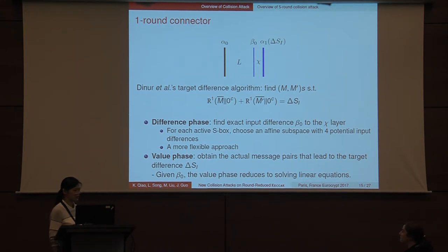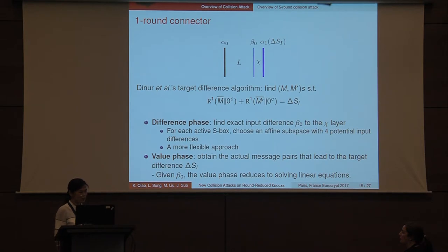Dinur et al. built a one-round connector to find the message pairs that after padding and one-round permutation, the difference of the pairs is exactly the target difference delta I. This algorithm contains difference phase and value phase. The aim of the difference phase is to find exact input differences to the chi-layer, the beta 0. So for each active S-box in chi-layer, instead of choosing the input difference directly, they choose an affine subspace with four candidates instead. This is a more flexible approach to avoid inconsistency in the system. So when the beta 0 is given, the value phase reduces to solving linear equations to obtain the actual message pairs that lead to the target difference delta SI.